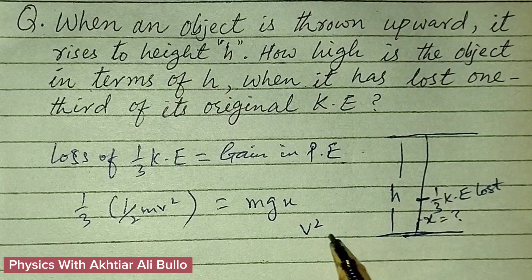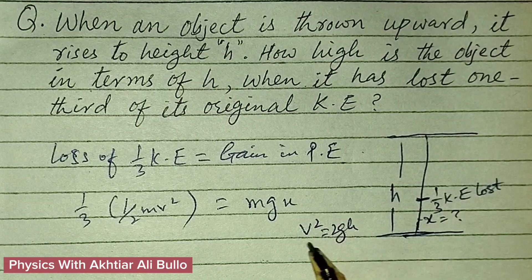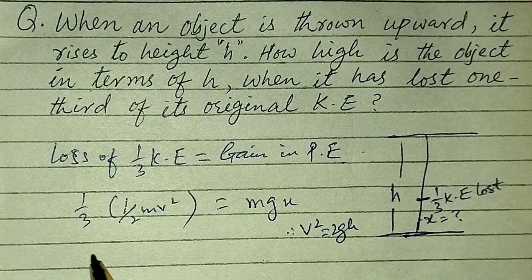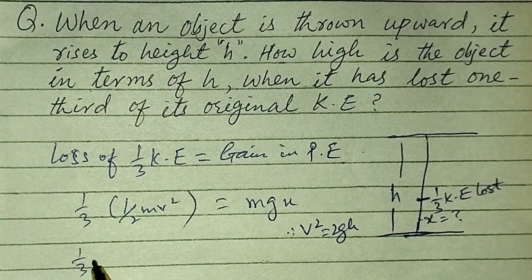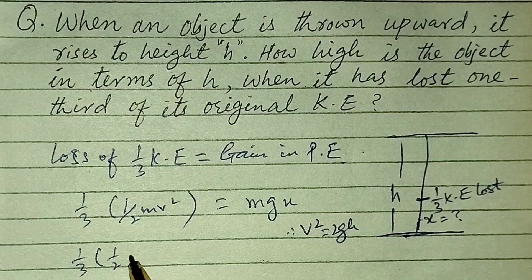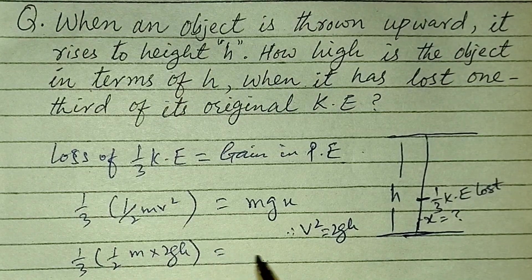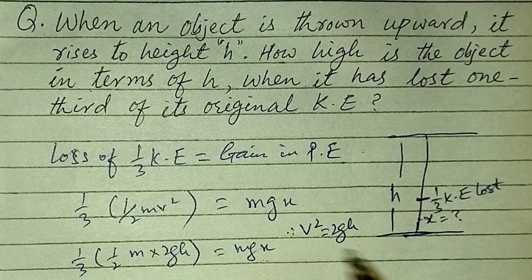v² is equal to 2gh, so by putting the value of v², 1/3 into 1/2 m into 2gh is equal to mgx.